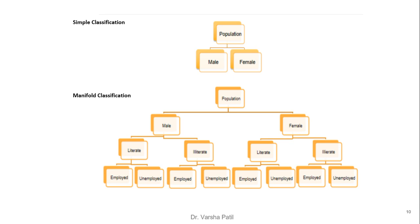Here is an example of simple and manifold classification. In simple classification, the population is divided into only two categories based on gender: male and female. In manifold classification, more features are used — first the population is divided into male and female, then male is further divided into literate and illiterate, and again into employed and unemployed, and similarly for female.